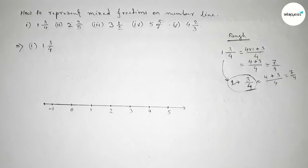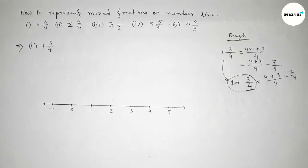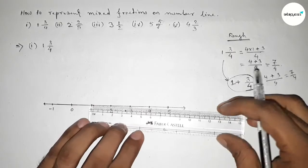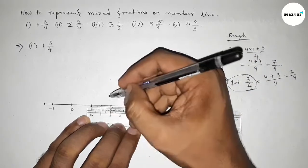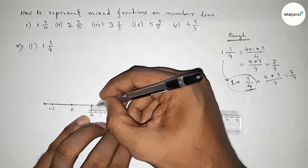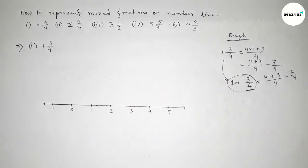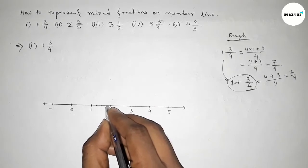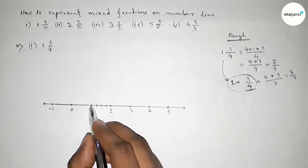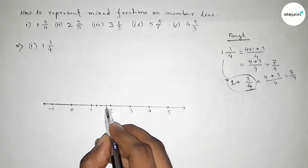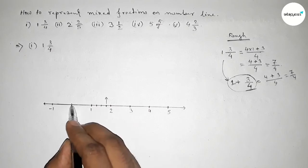We need to represent three over four between one and two. First, divide the distance between one and two into four equal parts: taking the half between one and two, then dividing again. This is the half between zero and the midpoint, and between the midpoint and two. Counting three over four: this is one over four, two over four, and three over four on the number line.